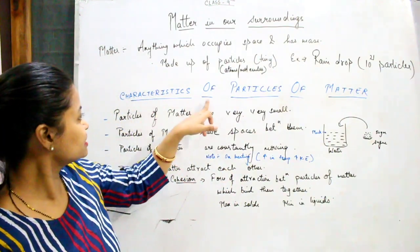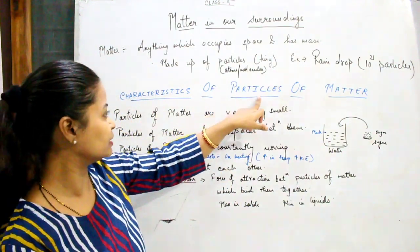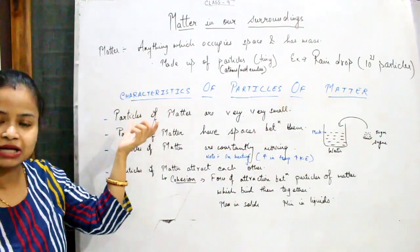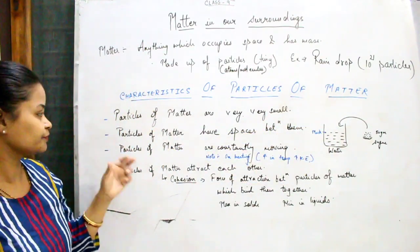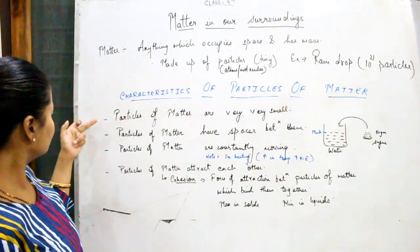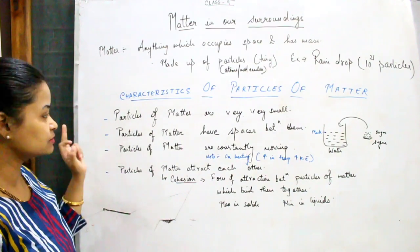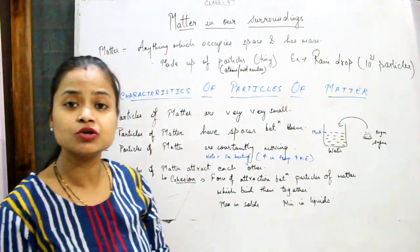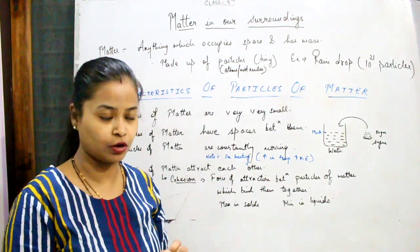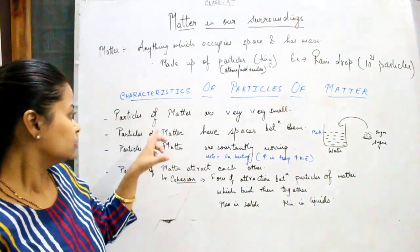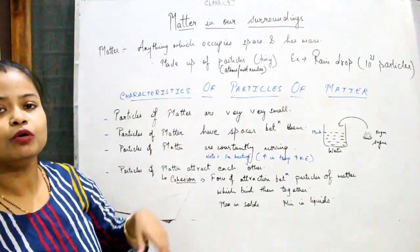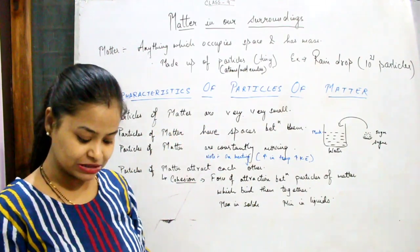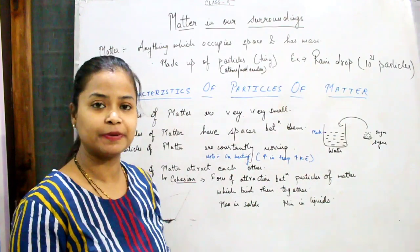Now we will see characteristics of particles of matter. Characteristics are the features. We will see four characteristics. The first one is: particles of matter are very, very small. This we can show by an experiment known as the dilution experiment.